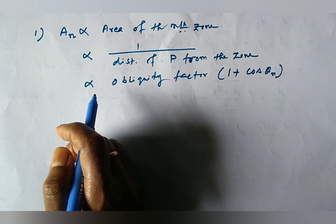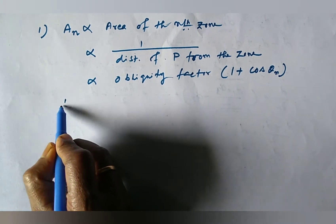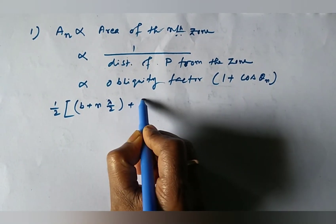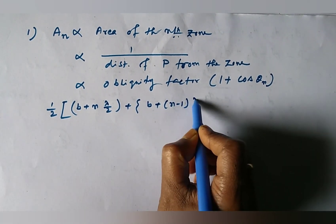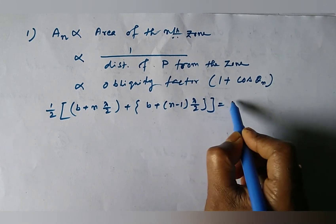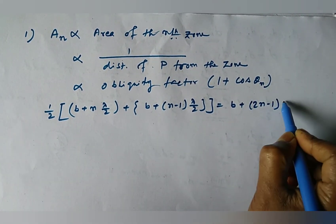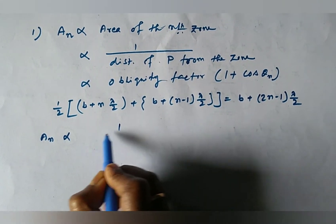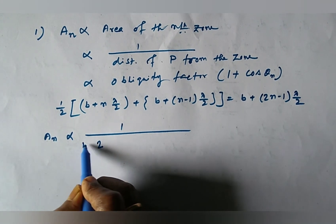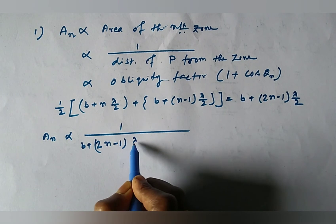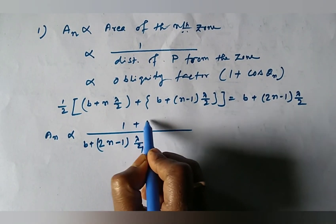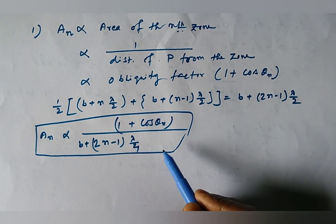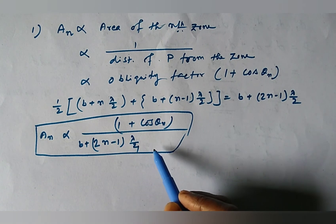Now, the average distance from P to the nth zone will be half of B plus n lambda by 2 plus B plus n minus 1 lambda by 2, which equals B plus 2n minus 1 lambda by 4. Then the amplitude An is proportional to 1 over B plus 2n minus 1 lambda by 4, times 1 plus cos theta n. This is the amplitude at P due to the waves coming from the nth zone.